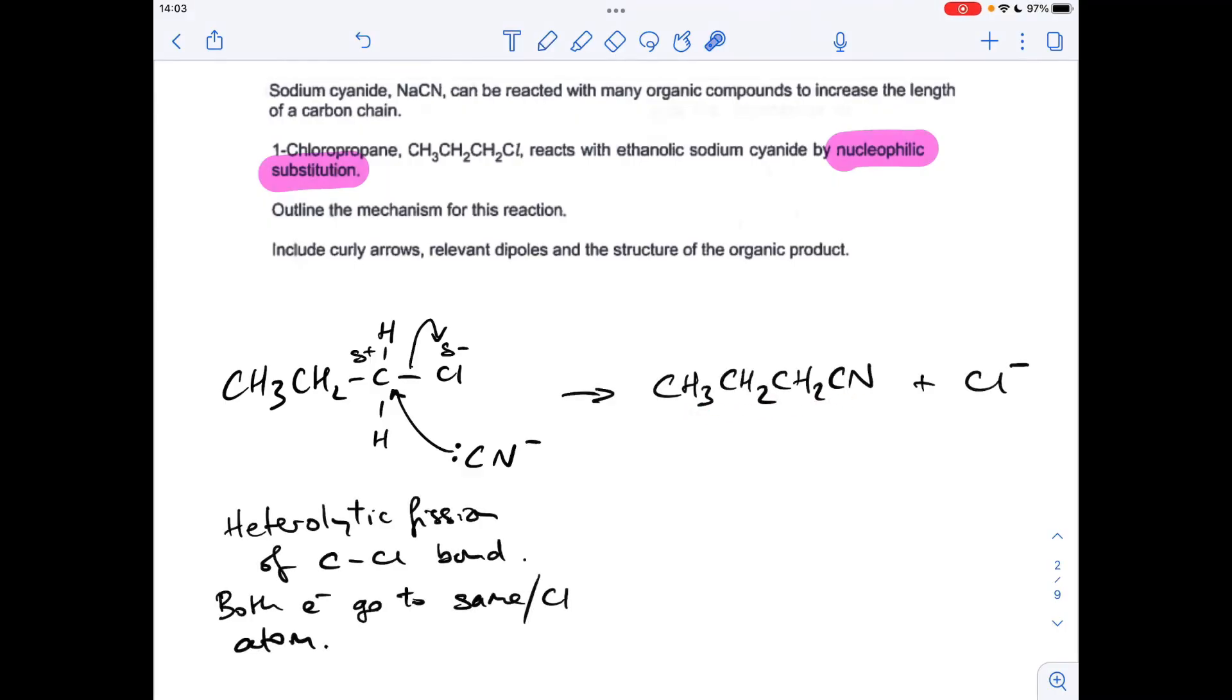So there's my product, obviously don't forget about that chloride ion, and I've also included, hasn't asked for this, but I've just put it in just for your benefit really, heterolytic fission, so that's where this covalent bond here, this C-Cl bond, is broken in such a way that both of the electrons in the bond go to that same chlorine atom.